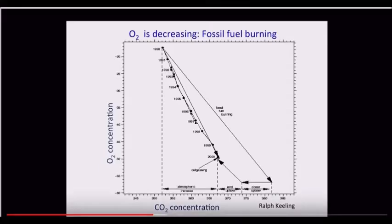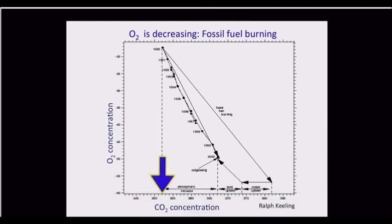Here I've plotted the CO2 concentration on the bottom axis, and what you see is from about 1989 up to the present, or I guess this is 2000. CO2 has been increasing along this way, and at the same time that CO2 has been increasing, oxygen, which Ralph is measuring, has been falling.